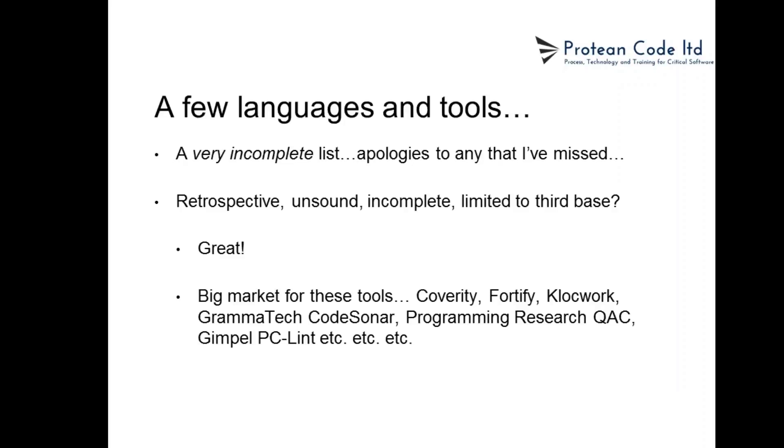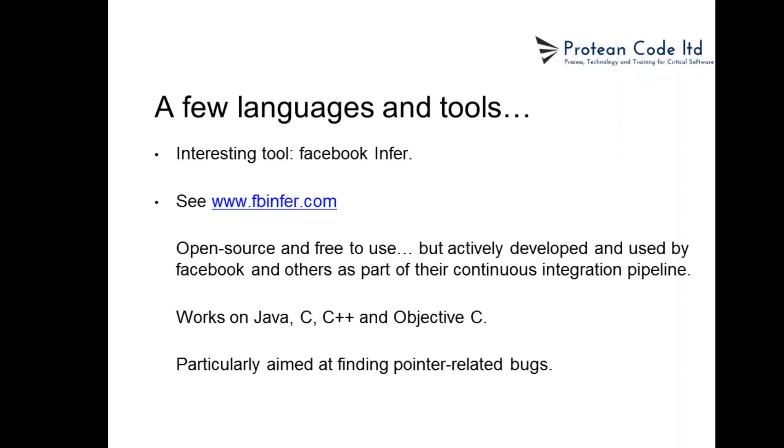So a very brief tour, then, of some languages and tools. This is incredibly incomplete because I'm so constrained for time. So the big retrospective tool bar, you know, I mentioned earlier. So all of these tools that are essentially retrospective, they are all unsound, they are all incomplete, have false positives a certain amount. They're all pretty much limited to third base. None of these tools are going to the kind of user-defined assertions stuff. But there's a big market. So this market is dominated by companies like Coverity, Fortify, Klocwork, GrammaTech, Капital CodeSonar, Programming Research based in the UK have been in the market a long time with QAC and QAC++. An older player in the market is Gimpel with PC-Lint, and so on and so on. There are lots and lots of tools in this market. Lots of them claiming to find security bugs in your code. Security is really sexy at the moment, obviously. Safety isn't so sexy. So lots of them are focusing on the security vulnerabilities kind of stuff. They're just bugs. Nothing special about them.